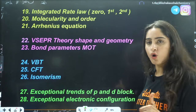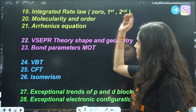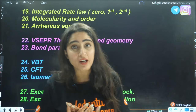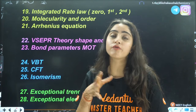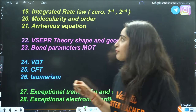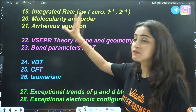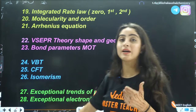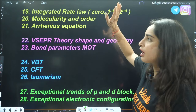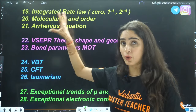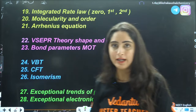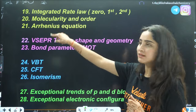Next is integrated rate law from chemical kinetics — zero order, first order, and second order. Remember formulas for second order, the general formula for half-life and units for different orders, and the difference between molecularity and order. Then the Arrhenius equation: graphs of zero order and first order are very important, as is the graph of the Arrhenius equation and temperature dependence.